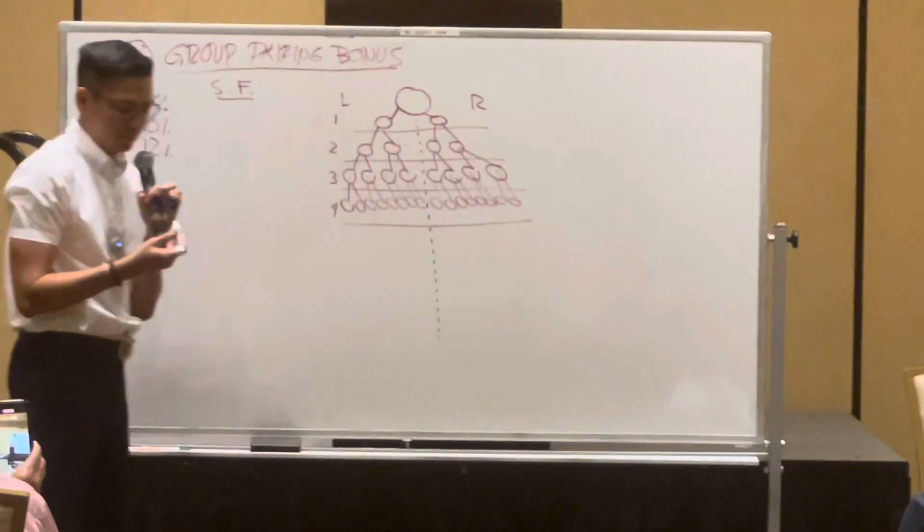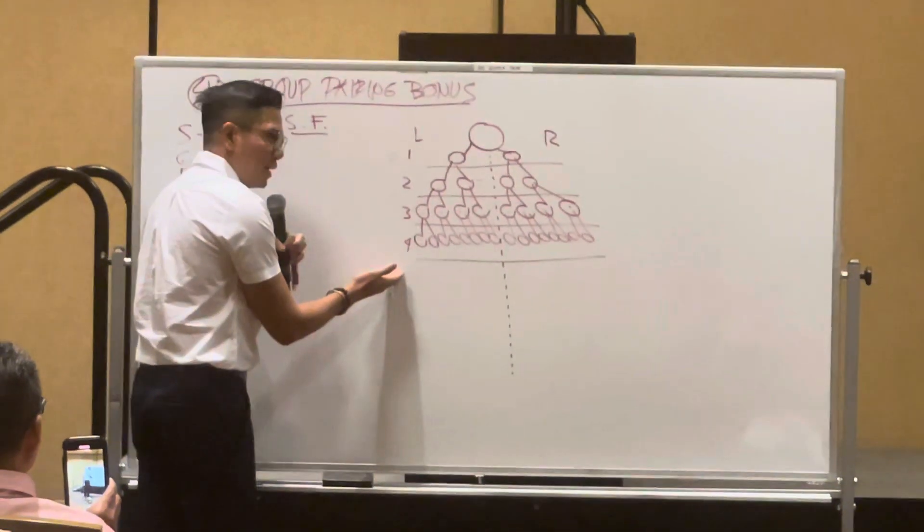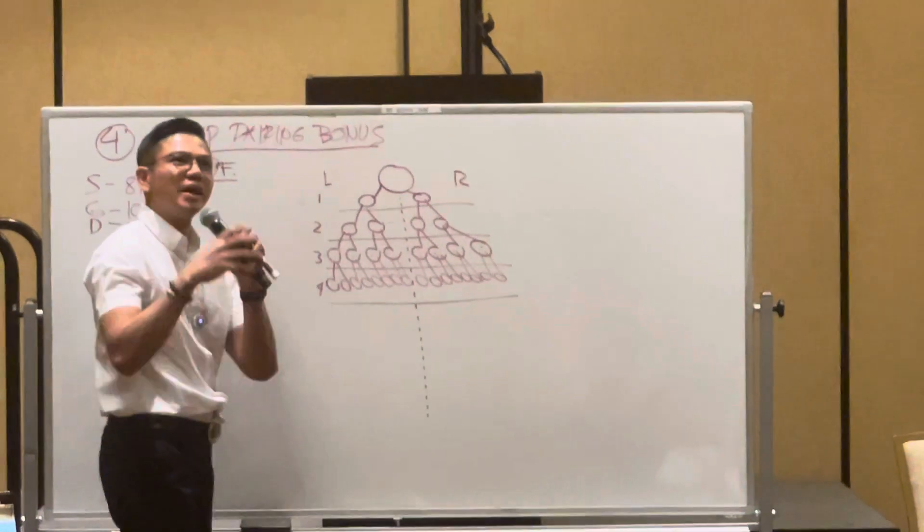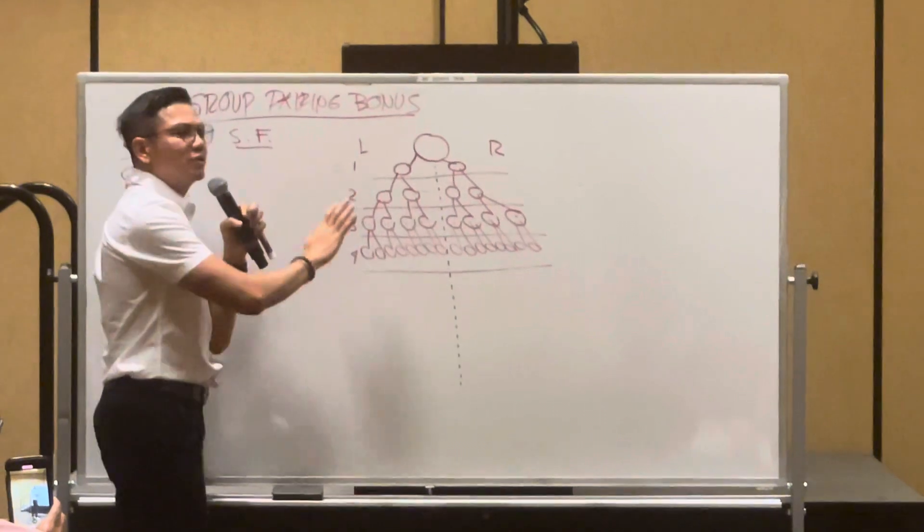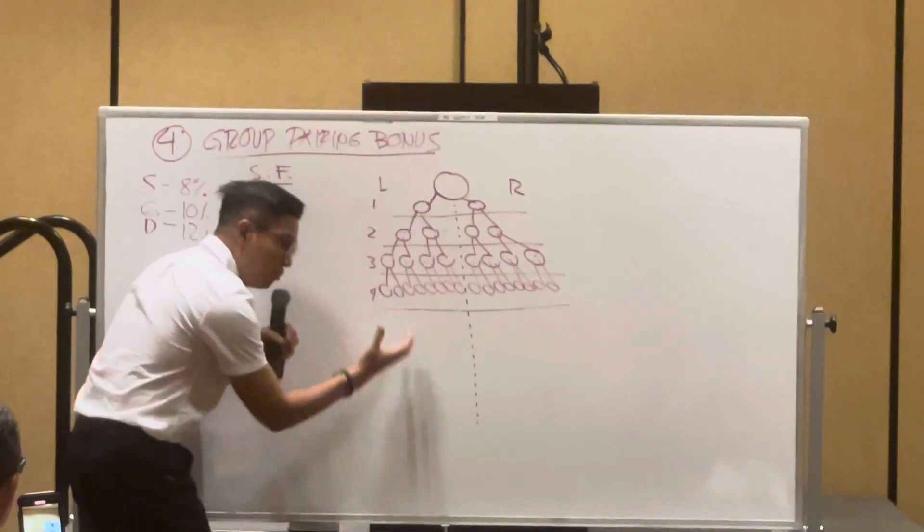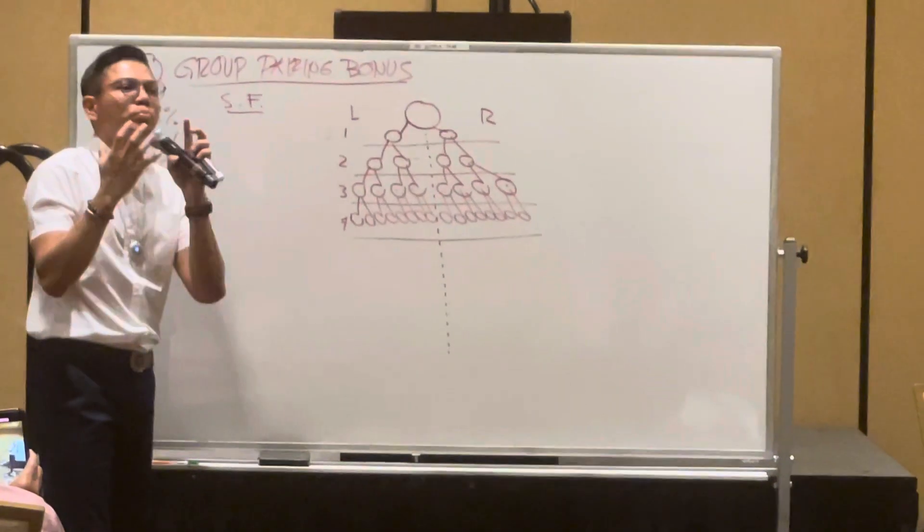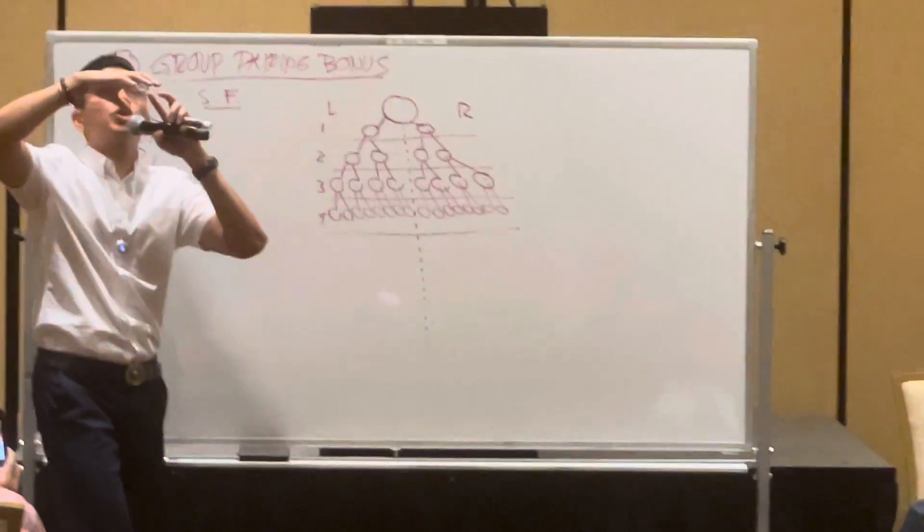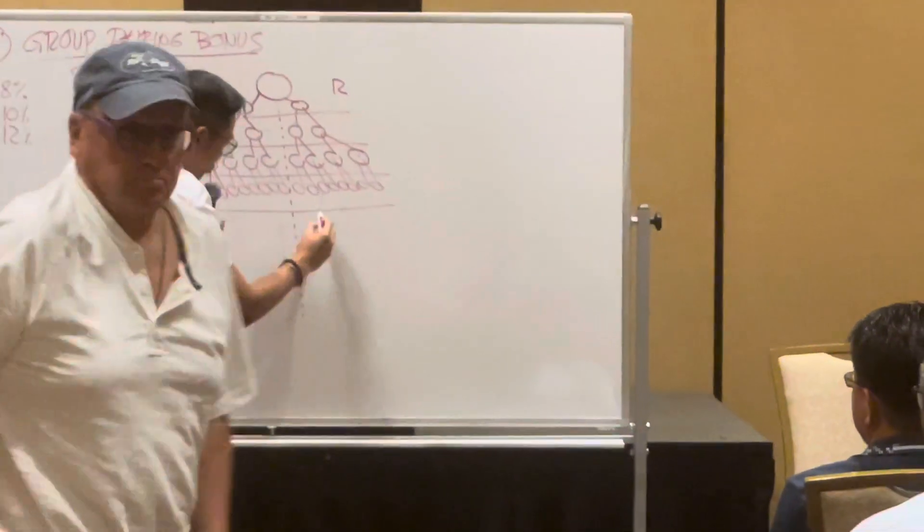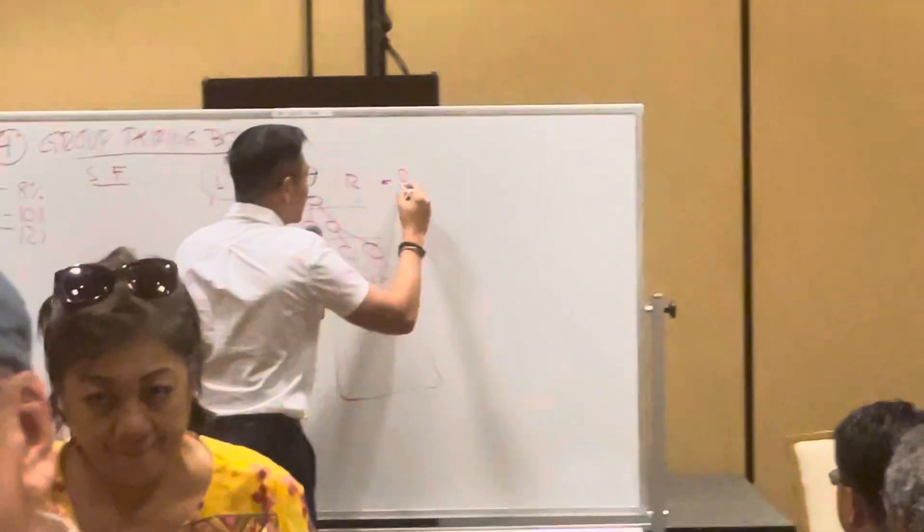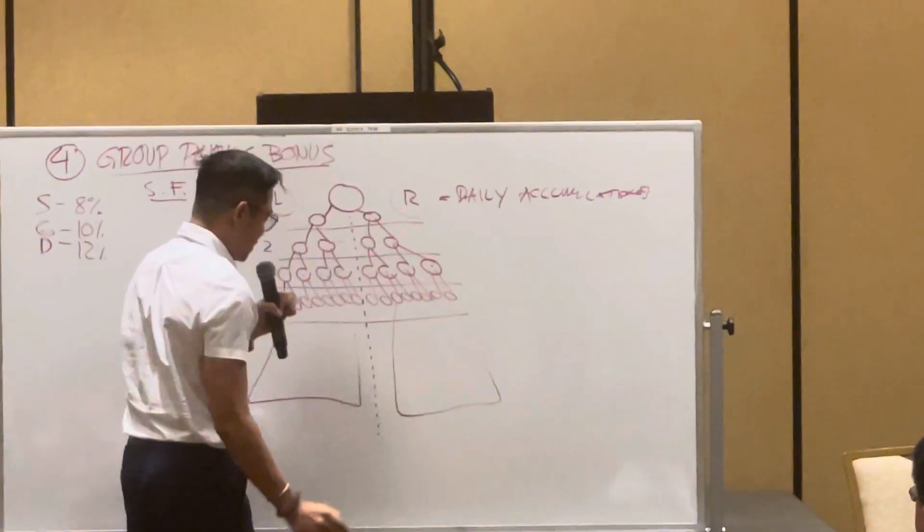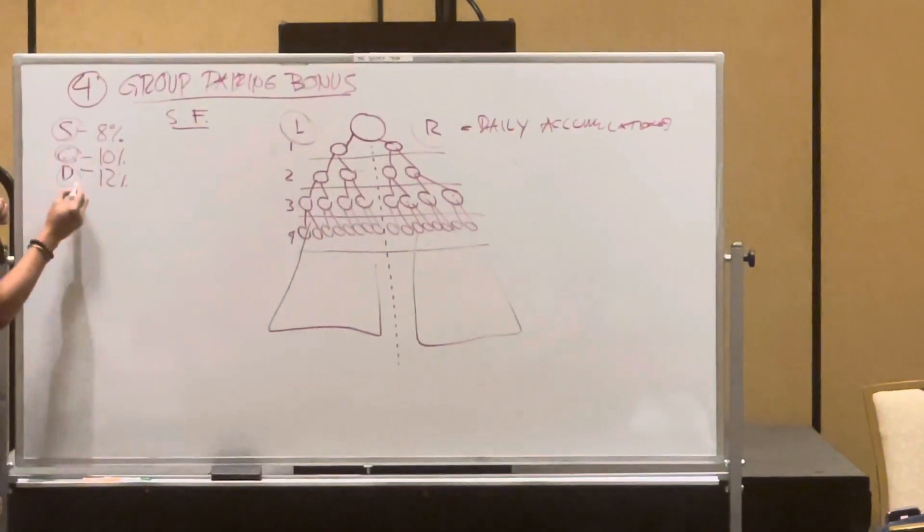When they start putting accounts here, that's where the group pairing bonus kicks in. Now, I don't want you to get confused again. The way the every level pairing bonus is calculated or the system is one pair every level. Here, regardless, as long as that point value comes from the fourth level, infinite, now the system calculates it per side, accumulates it on a daily basis. So in other words, all the points on the left side and all the points on the right side on a daily basis, accumulation, or accumulated, and then you are paid according to your package.